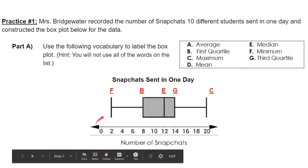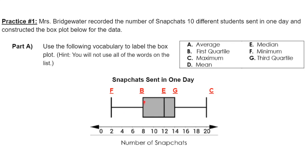Let's just go from left to right. The part here is the minimum, F. The start of the box is the first quartile, B. Whatever line is in the box is your median, E. The other end of the box is the third quartile, G. The end of the box plot is the maximum, C.